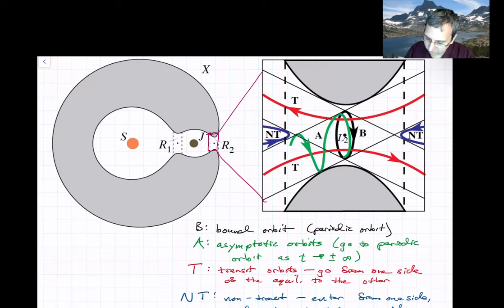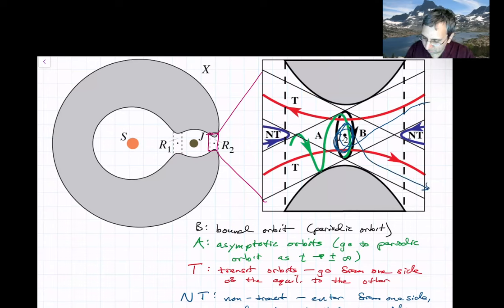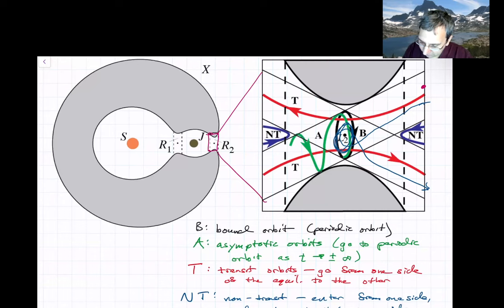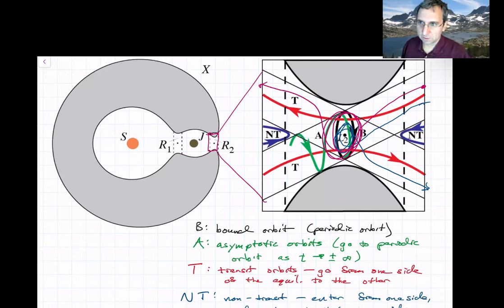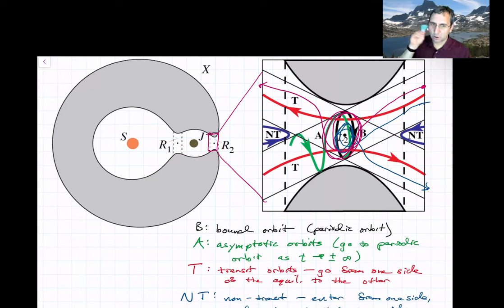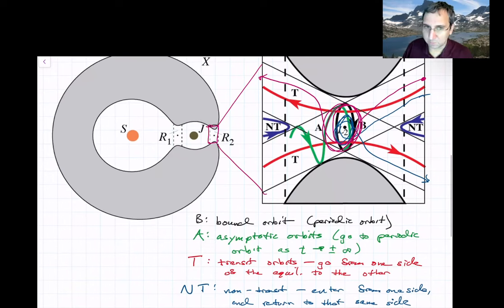Non-transit means an orbit enters from one side and returns to that same side. It could come in and even go around the Lagrange point a few times, but if it returns to that same side it's a non-transit. Similarly, transit orbits might go around L2 a few times before leaving. This becomes important in the careful writing of the theorem — you can specify not only which realm an orbit visits, but also how many times it goes around a Lagrange point, i.e., how many circuits.